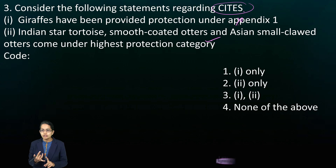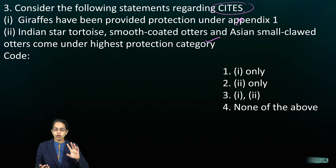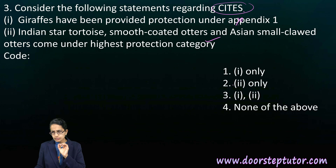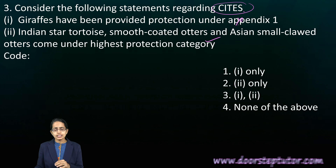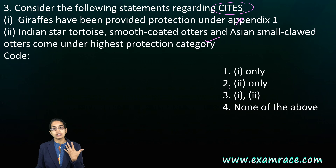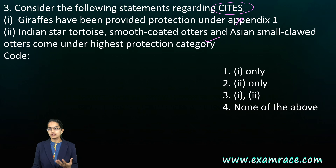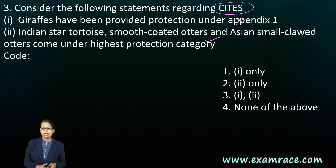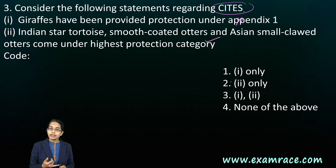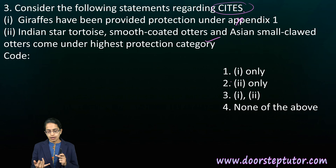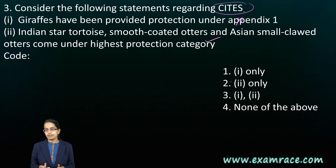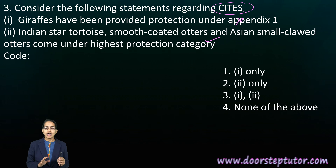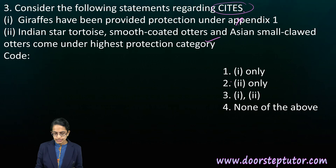CITES Appendix 1 talks about commercial exchange. The Tokay gecko and another species of starfish are some of the species protected under Appendix 2. The CITES convention under IUCN — Appendix 1 and Appendix 2 — are very important. CITES has been adopted under IUCN 1963.